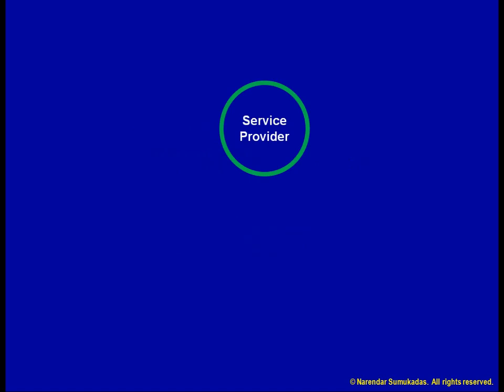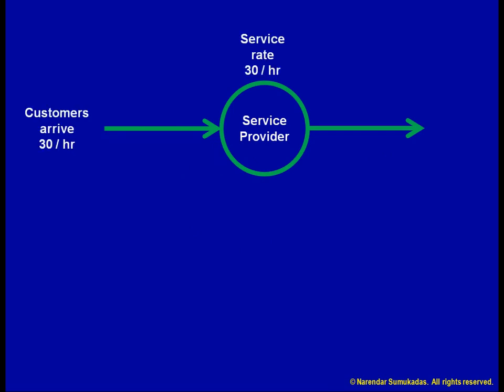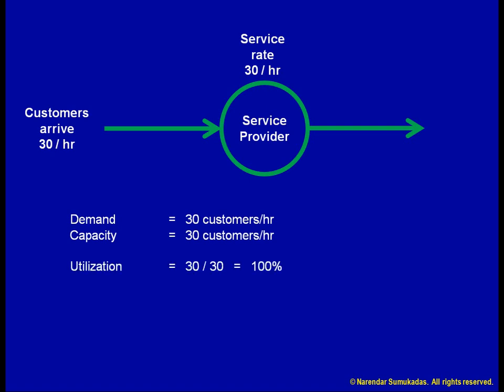Let us say we have a service provider. Customers enter, are served, and leave. Suppose customers arrive at a rate of 30 per hour and we can serve them at the same rate of 30 per hour. That is, our demand is 30 customers per hour and our capacity is also 30 customers per hour. The capacity utilization of our system is 100%. Such a system seems, at first glance, to be well balanced — we have adequate capacity to meet the demand, but no more than is necessary, so there is no wastage. Our system is working at 100% efficiency.